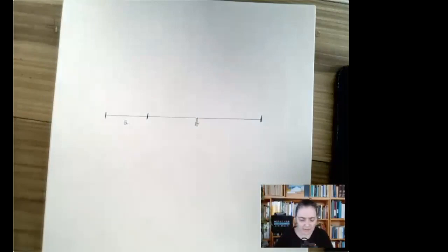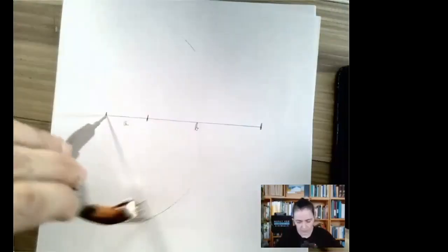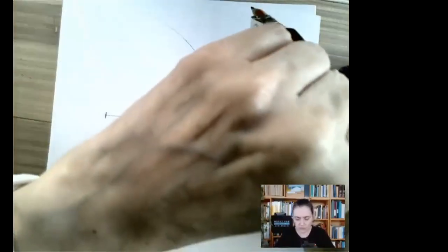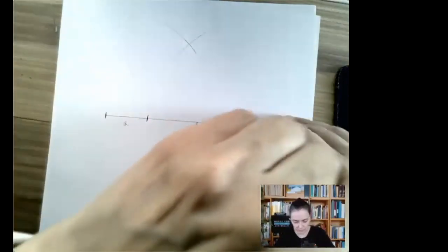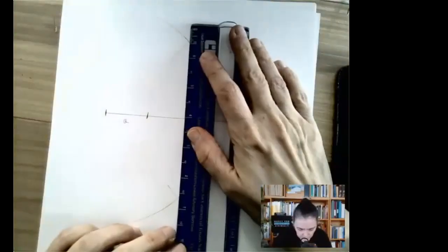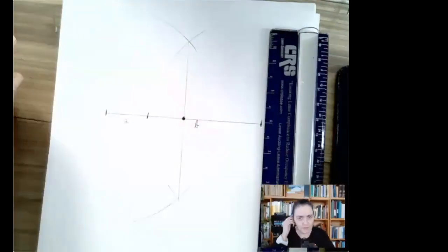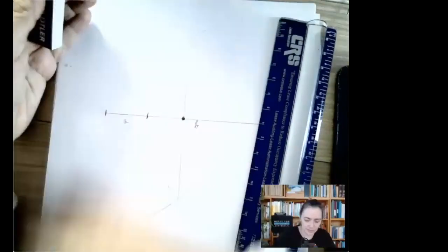Next, we're going to draw the semicircle of this line segment. I think I should have done it a little bit smaller. Right now I'm constructing the perpendicular bisector just for the midpoint, which I need for the semicircle.